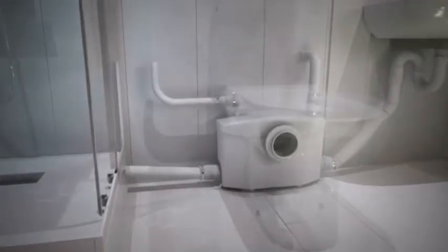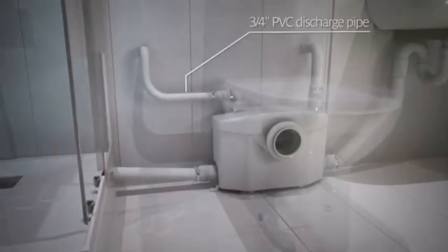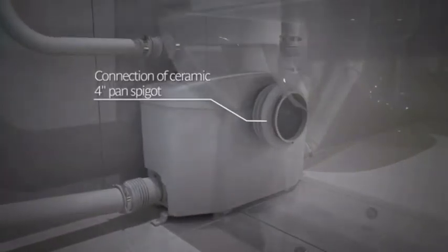Using the provided discharge elbow, connect your 3-quarter inch discharge pipe. Then connect the toilet to the main inlet of the pump using the 4-inch coupling provided.